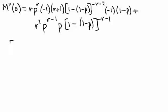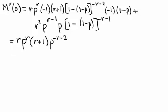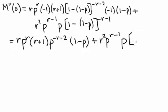Now all we need to do is simplify that. We have r times p to the r, and now this negative 1 times this negative 1 becomes positive 1, so that goes away, and then we have r plus 1. Then we have 1 minus 1 equals 0, and negative times negative p gives a positive p to the negative r minus 2, and then we have 1 minus p. For the second sum, we have r squared times p to the r minus 1 times p — the exponent 1 minus 1 is 0 — so we end up with p to the negative r minus 1.